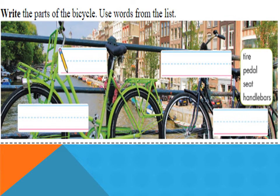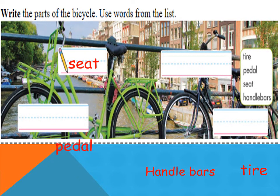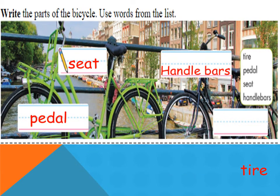Write the parts of the bicycle. Use words from the list. The words are: seat, pedal, handlebars, tire. Let's start — seat, pedal, handlebars, tire.